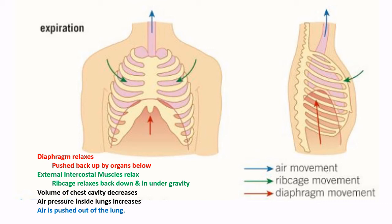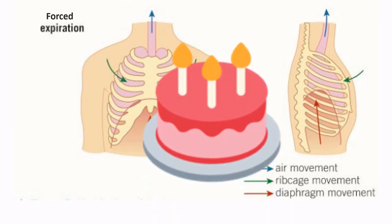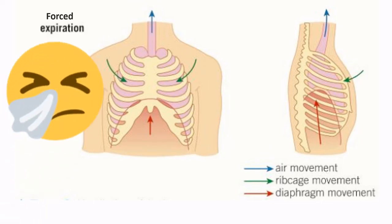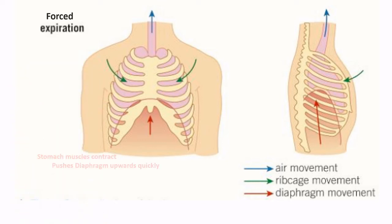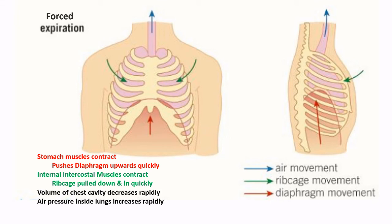There's one more breathing process and that is when we forcibly expire — this is the birthday candle breath, as I call it. It's also used when coughing or sneezing. Here the stomach muscles and internal intercostal muscles both contract at the same time, pushing the diaphragm up and the ribcage down really quickly. This rapidly decreases the volume and increases the pressure inside the lungs, which pushes out air at great speed.